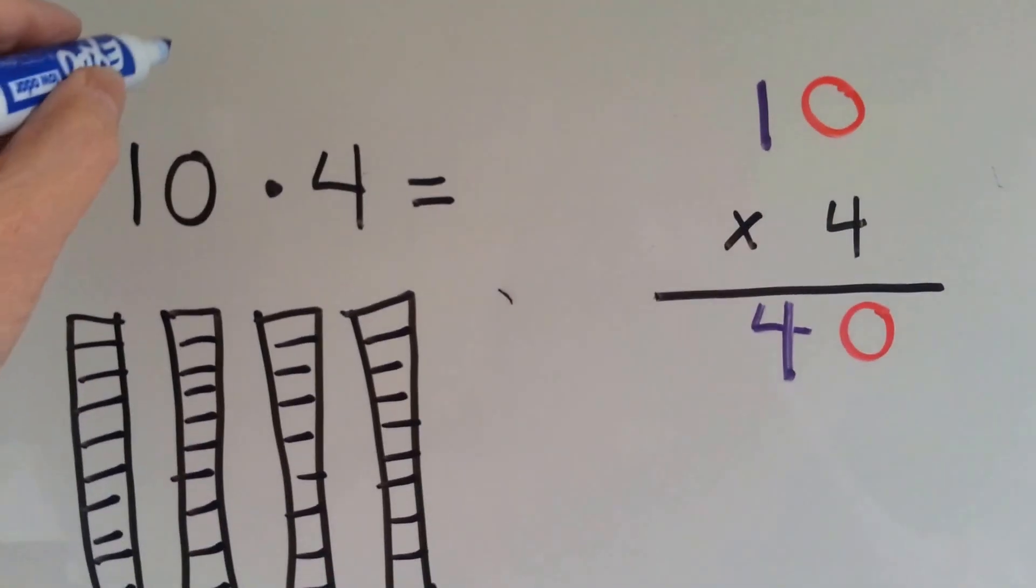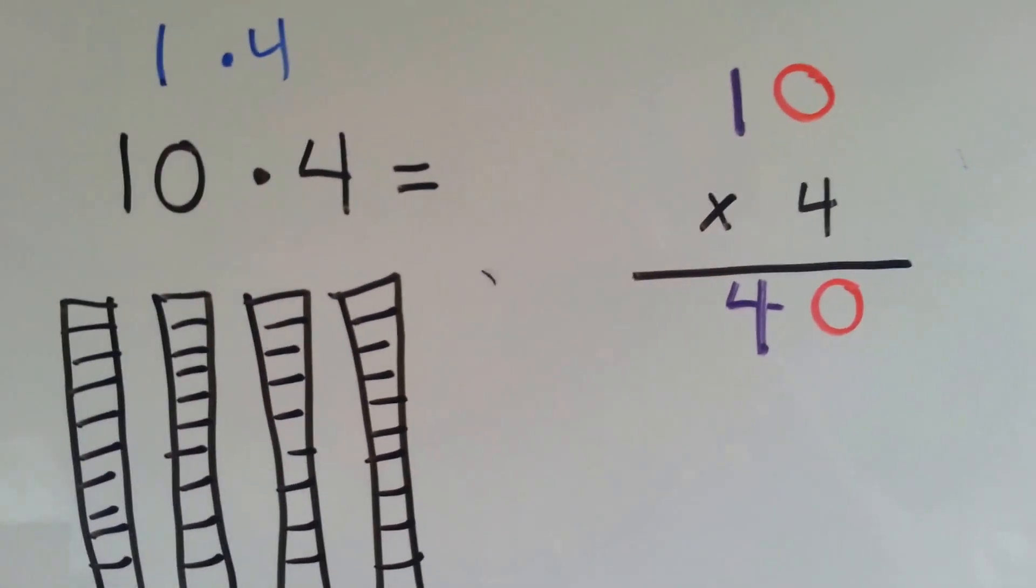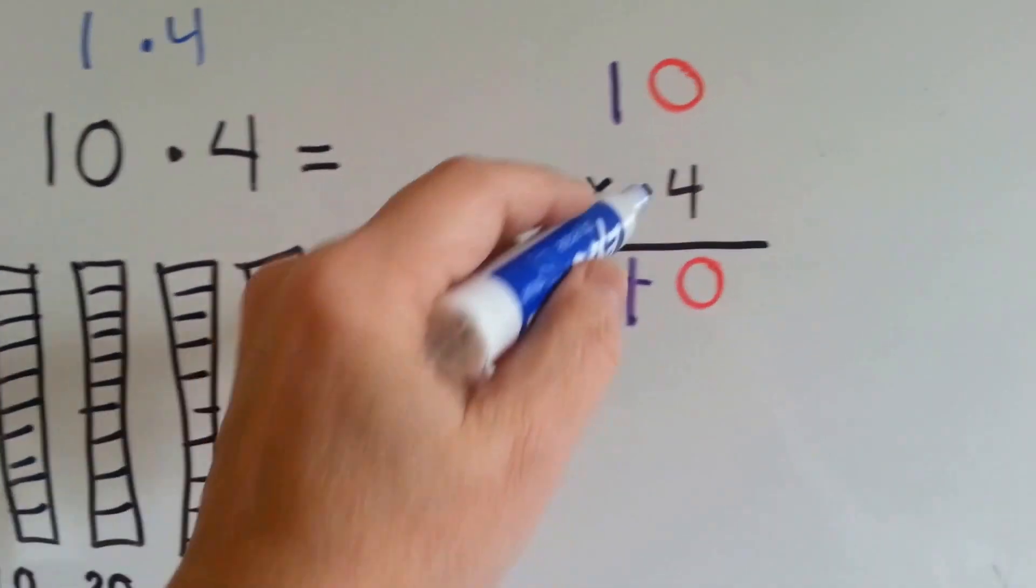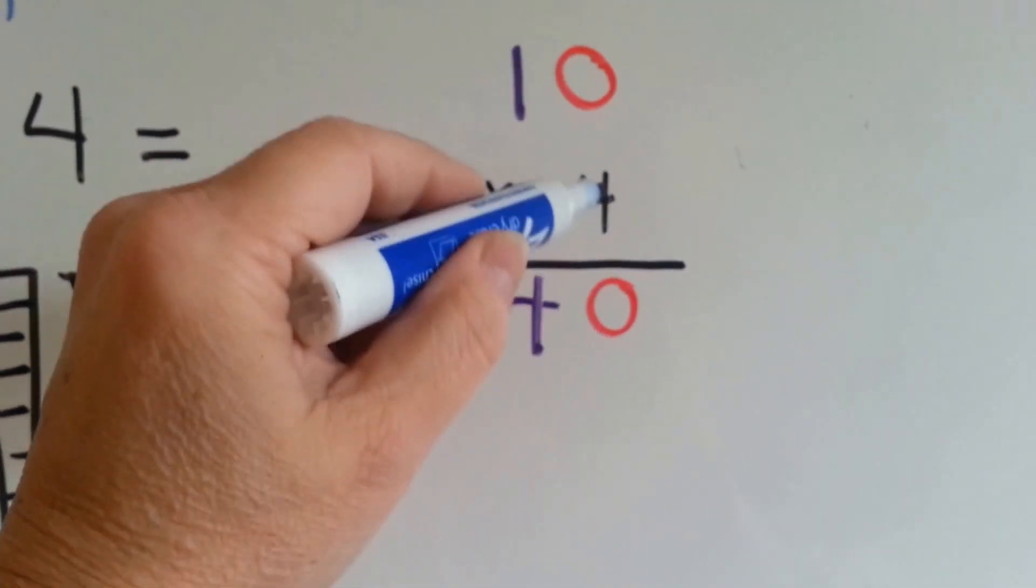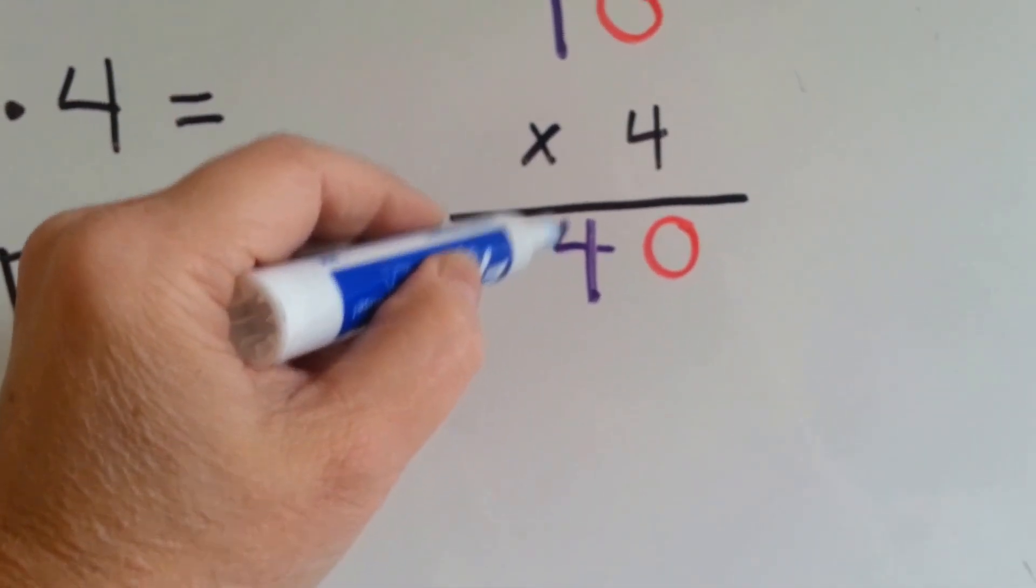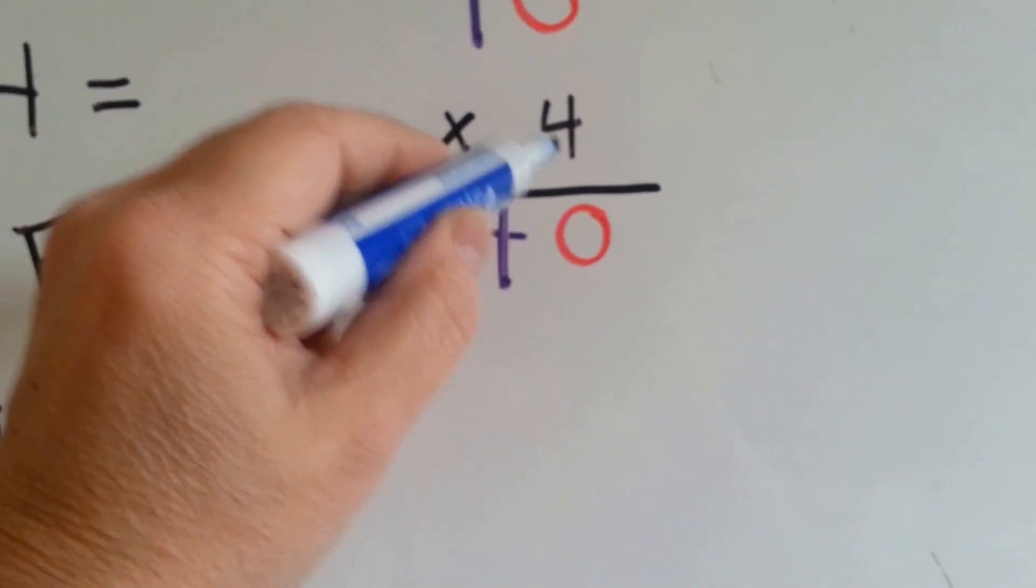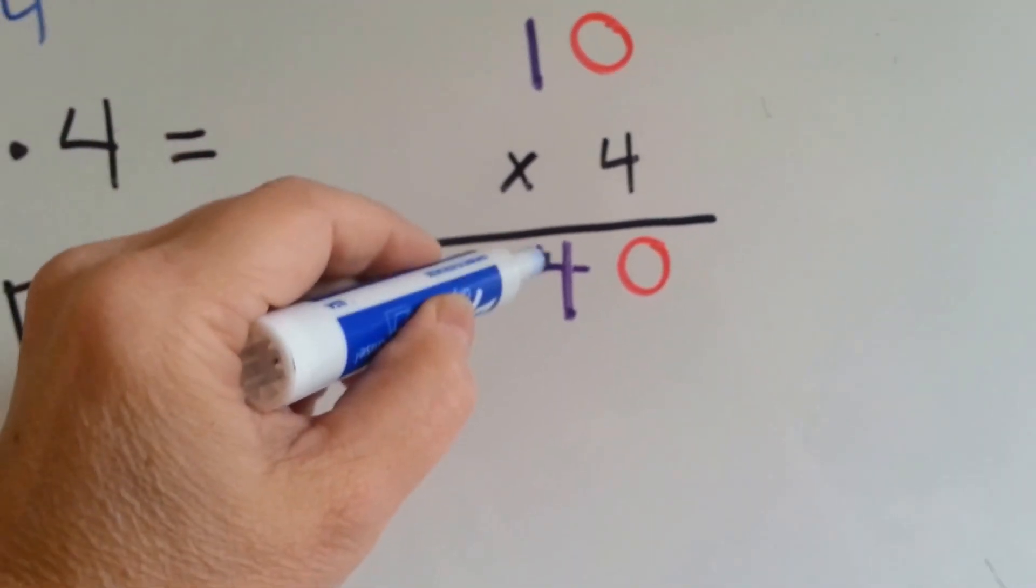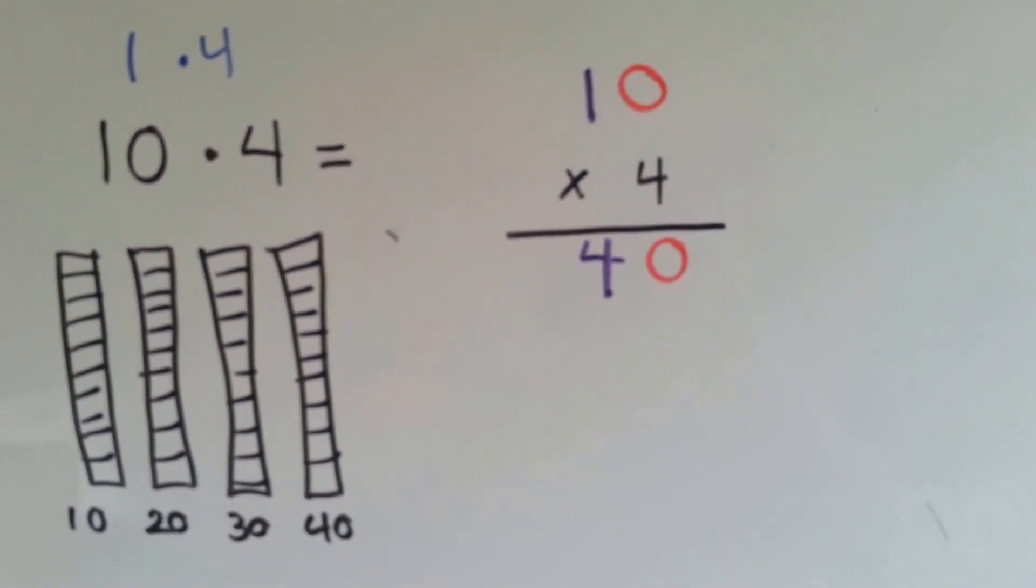Now it's almost the same thing as saying 1 times 4 and adding the 0. Here's what you do: you say 4 times 0 is 0, and 4 times 1 is 4. When we multiply the ones place, we put the answer in the ones place, and when we multiply the tens place, we put the answer in the tens place.